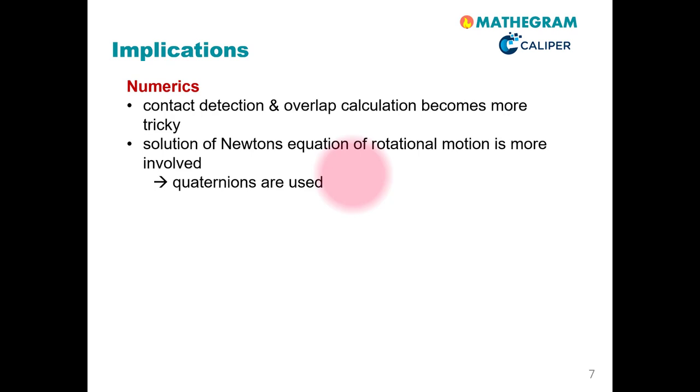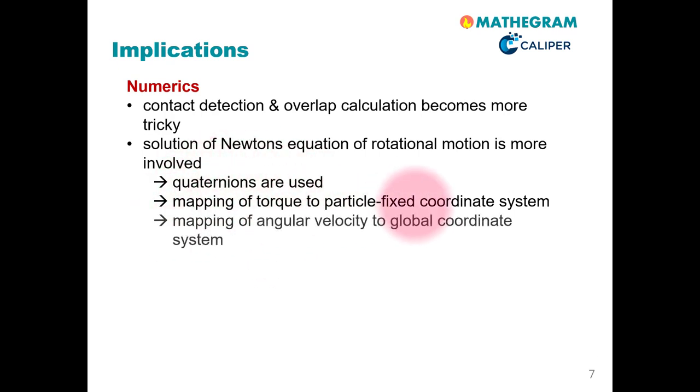We're going to use quaternions. We must do the mapping of the torque to the particle fixed coordinate system. And finally, if we want to know the angular velocity also in the global coordinate system, we must do this back mapping to the global coordinate system.